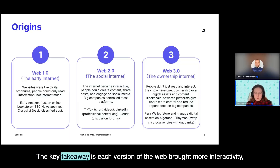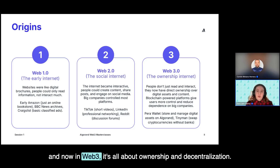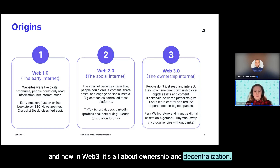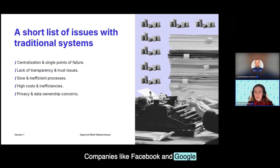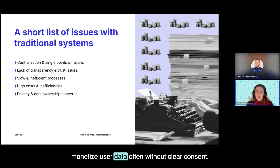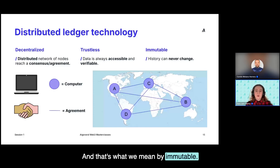The key takeaway is each version of the web brought more interactivity. And now in Web3, it's all about ownership and decentralization. Today, our data is the product. Companies like Facebook and Google monetize user data, often without clear consent. Once something is written to the blockchain, it stays there forever — and that's what we mean by immutable.